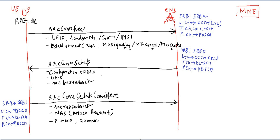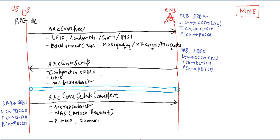After the second message, the RRC connection has been established. The UE is moved from RRC idle state to RRC connected state.